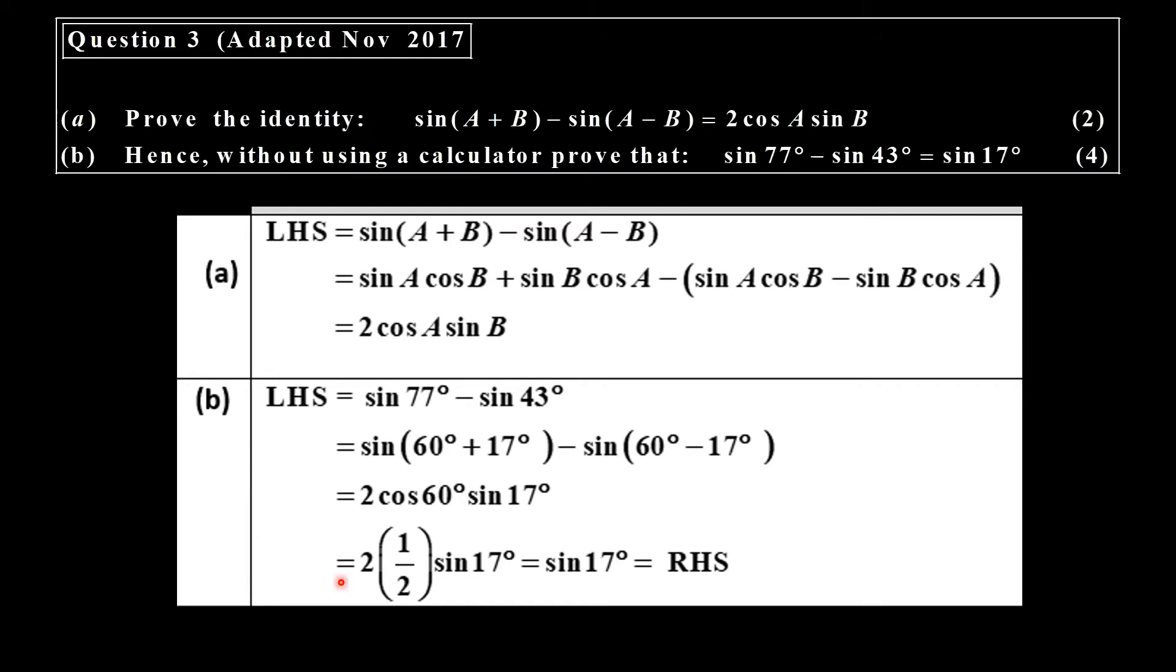Now, when they say hence, you must use this answer. So there I've got sine 77 and 43. I can split the 77 up into two angles, 60 plus 17 and 60 subtract 17. And now I can see that 60 is my a, and 17 is my b. And according to this is 2 cos a, so it's 2 cos 60, sine of b is sine of 17. Cos of 60 you can get from the calculator is a half. If you simplify there, you get your answer there.